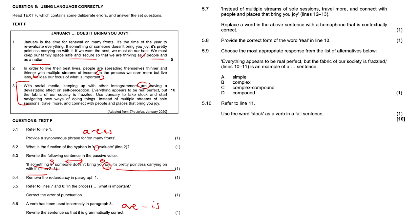5.7, instead of multiple streams of soul sessions, travel more and connect with people and places that bring you joy. That's coming from lines 12 to 13. Replace a word in the above sentence with a homophone that is contextually correct. So soul sessions, soul, like one person, like a soul trader, or soul, like your soul, the essence of your being. Not Seoul, the capital city of South Korea. That's different.